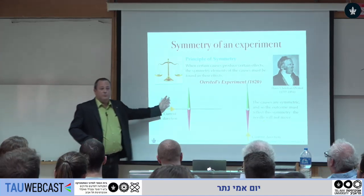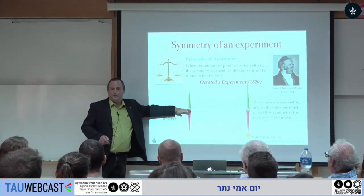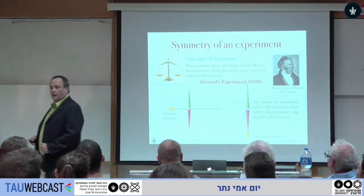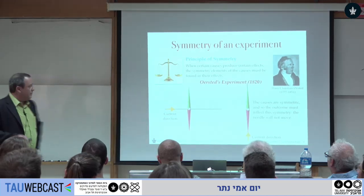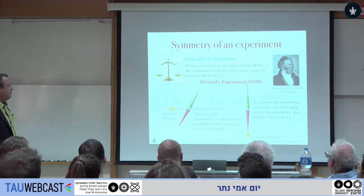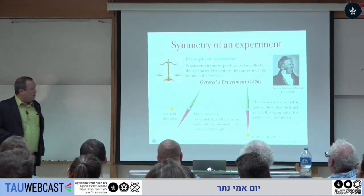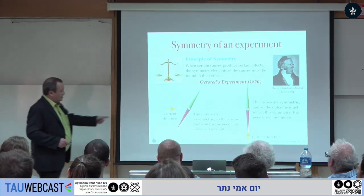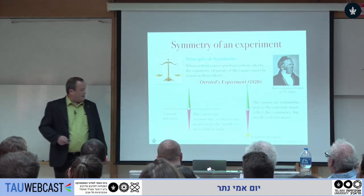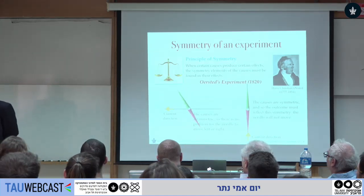But if we look at the current along the needle, there's no mirror symmetry — we either flip the needle or flip the direction of the current with a mirror. So there's no symmetry, and there's no problem for the current to tilt the needle. If we change the direction of the current, we expect the needle to flip in the other direction.